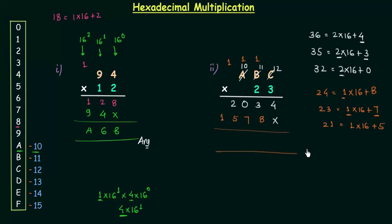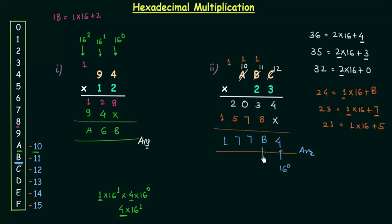Now we will add them. In the first column we only have 4. In the second column we have 3 and 8; 3 plus 8 is 11, and 11 we write as B. In the third column we have 0 and 7; 0 plus 7 is 7. In the fourth column we have 2 and 5; 2 plus 5 is 7 again. In the last column we have 1. So the answer is 1, 7, 7, B, 4. The positions carry weights of 16 raised to power 0 through 16 raised to power 4.